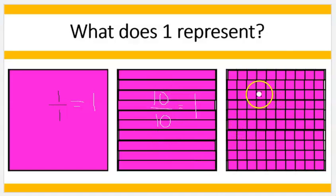And then finally, this last one would be represented as one hundred over one hundred, and it equals one as well.